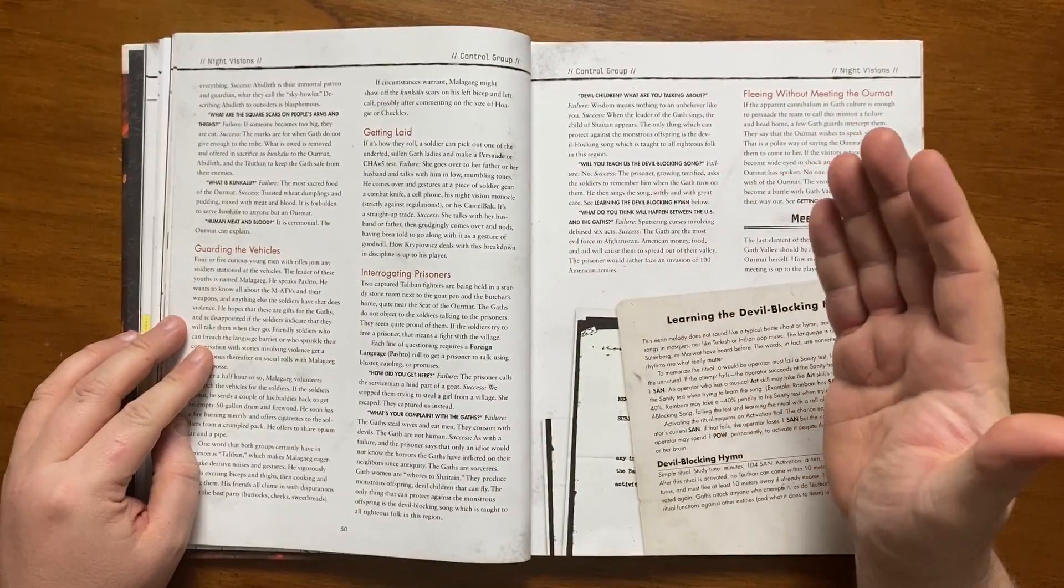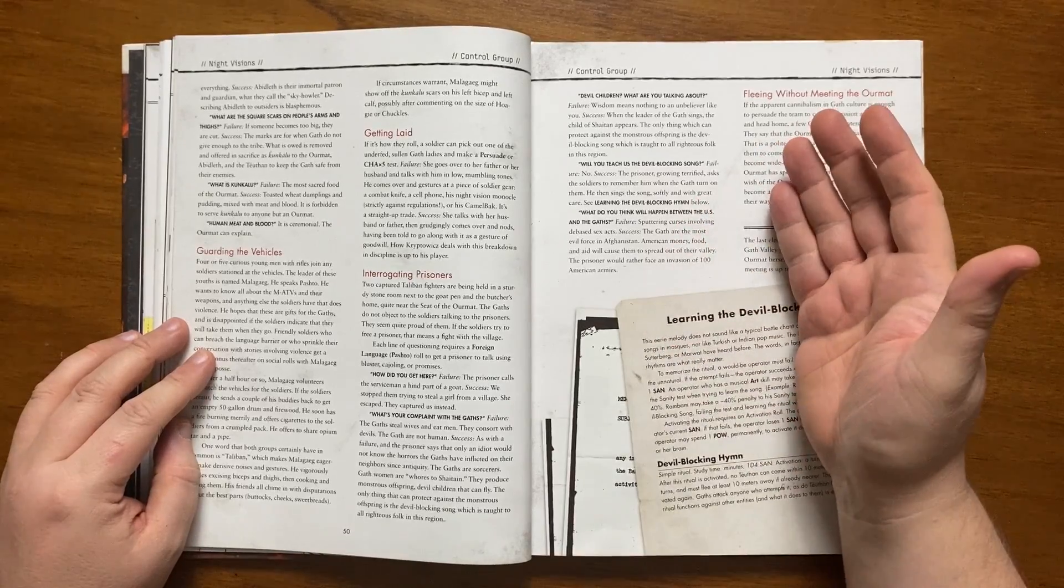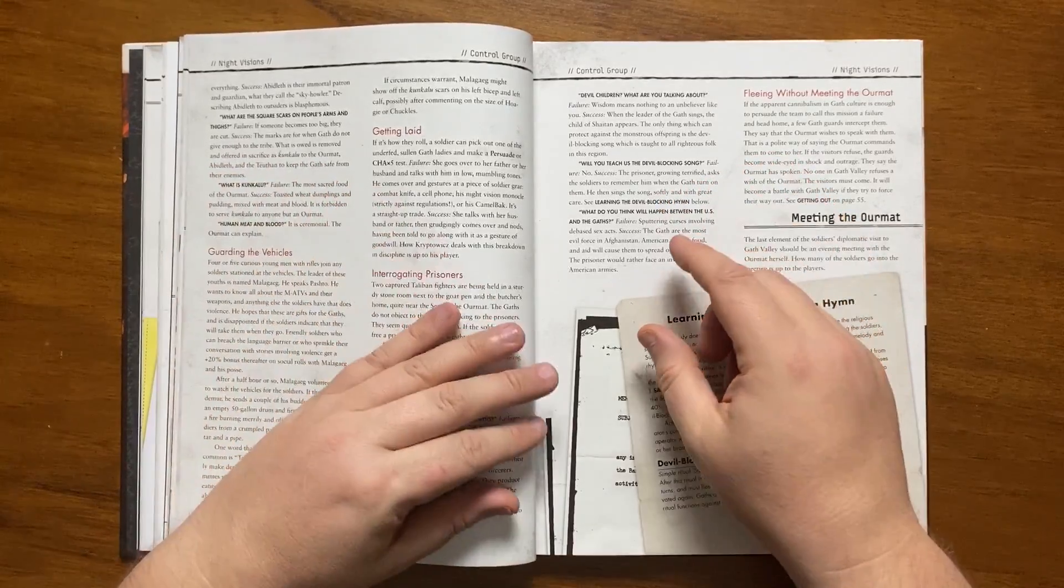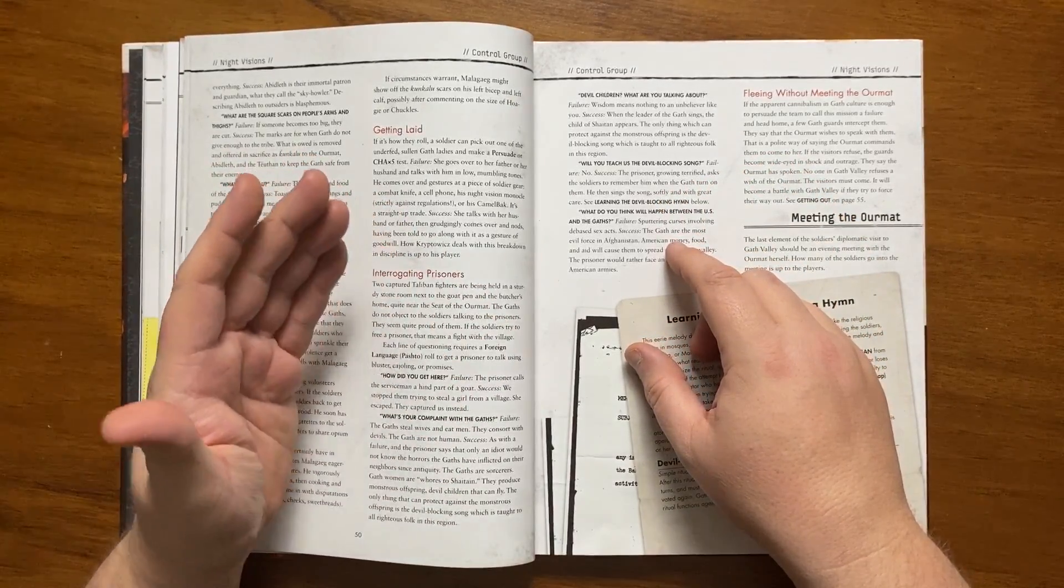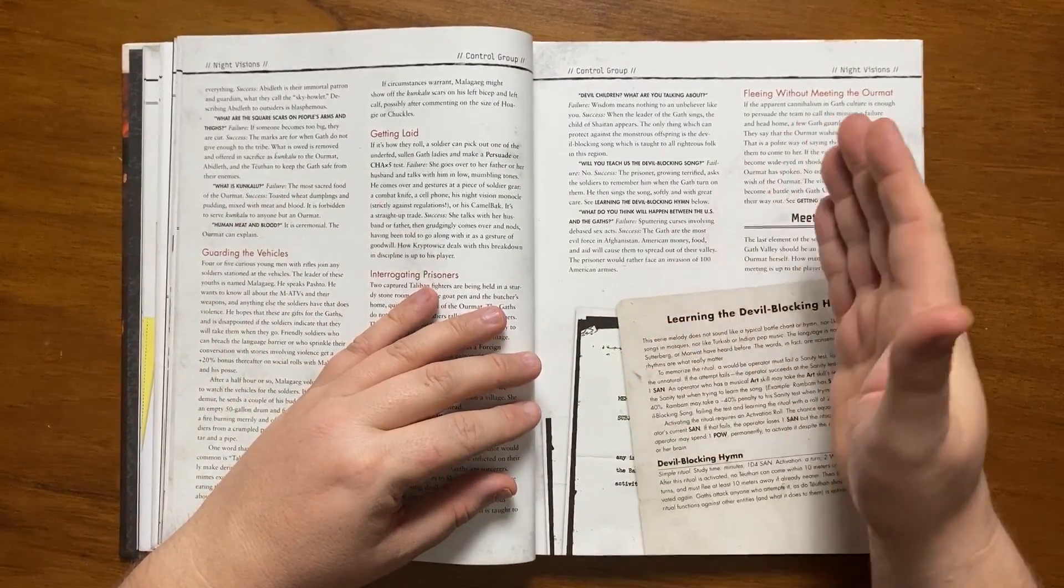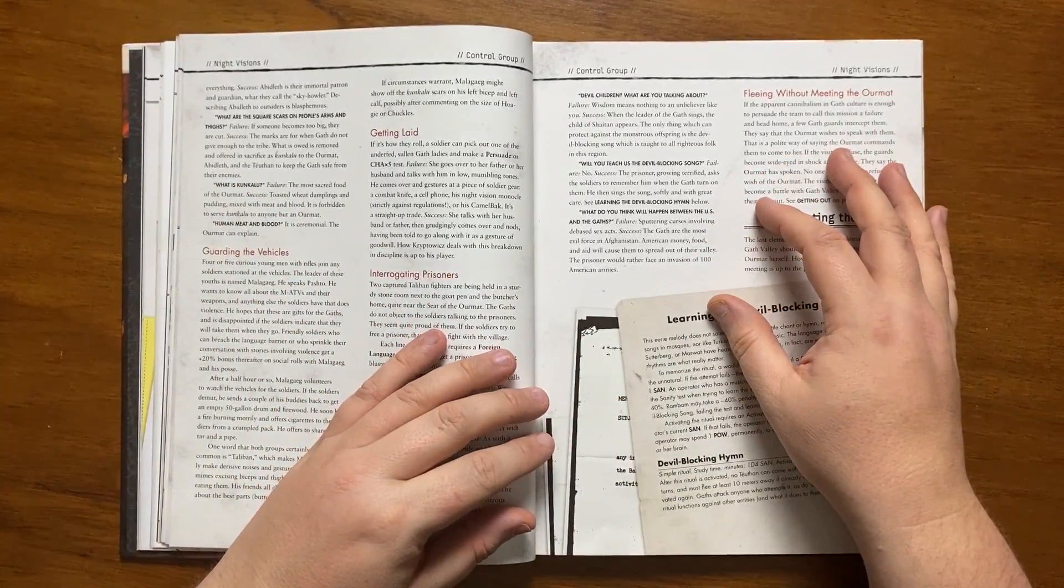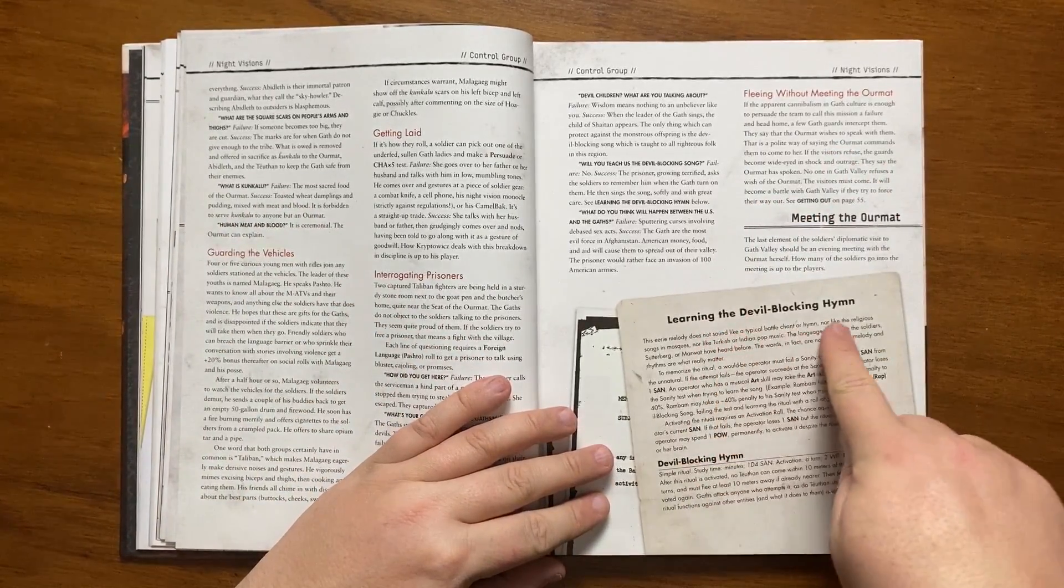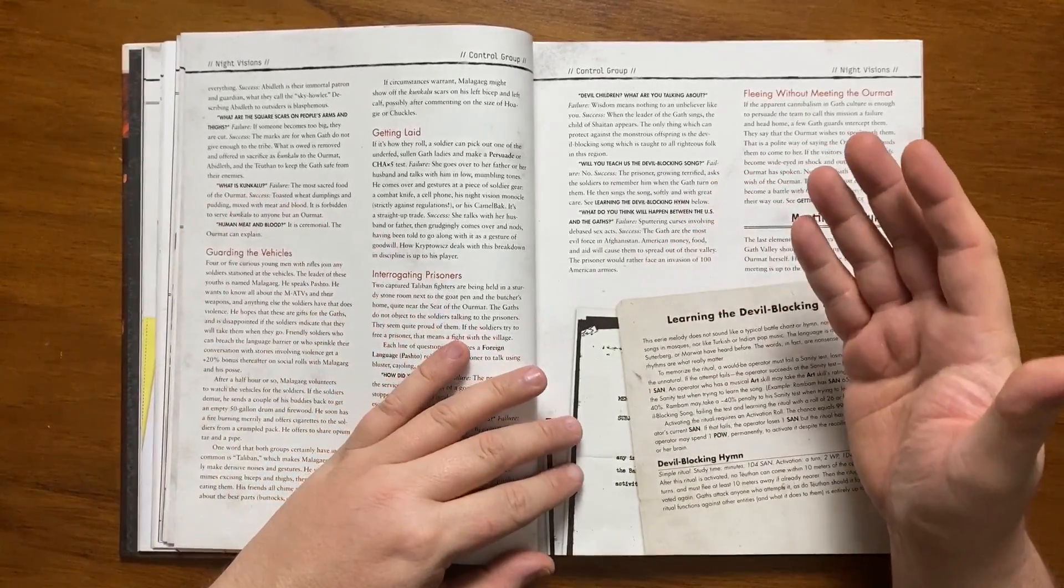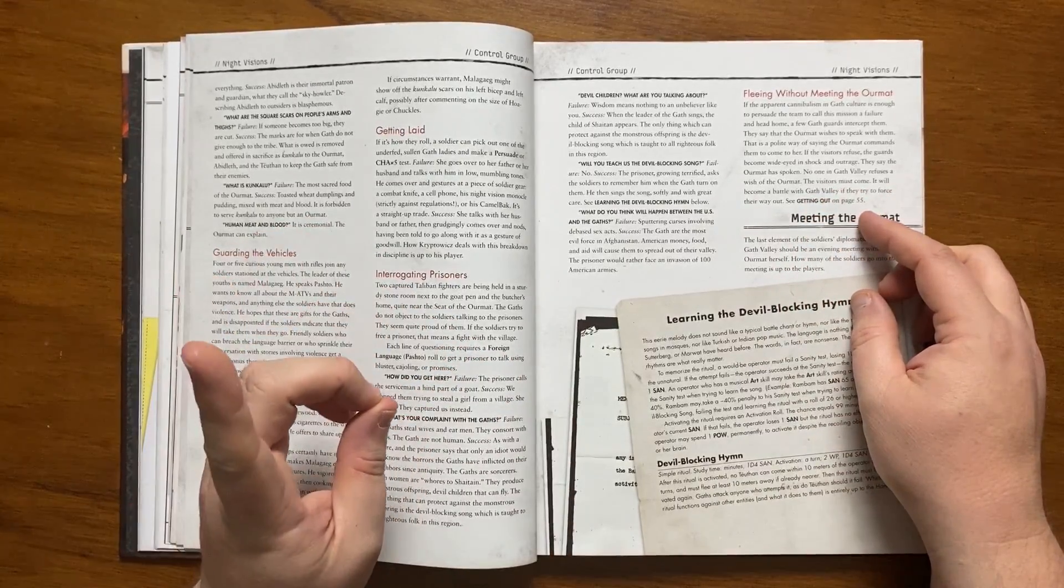It details an encounter with some of the younger gath men where they indicate that the Taliban had been eaten and even details what happens should one of the soldiers want to get laid. The next section details two Taliban soldiers that have been captured by the gath. They are being held in a secure stone room and the gath do not object to the soldiers talking to them. The Taliban can be conjoled into talking with the soldiers and being successful here could potentially save them later on. With the right roles it can be determined that the Taliban went after the gath after they tried to steal a girl from a local village. They will be told that the gath are sorcerers and that the gath women are whores of shaitain that produce monstrous offspring that can fly and the only thing that can protect them is the devil blocking song which is taught to the righteous folk of the region. If they are pressed on this they can find out when the leader of the gath sings the children of shaitain appear. If the soldiers press them the Taliban will agree to teach them the song on the condition that the soldiers remember them when the gath turn on them.